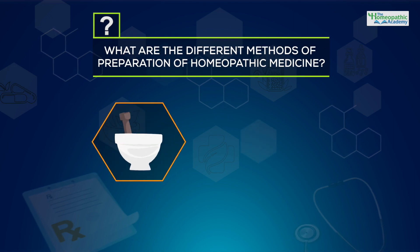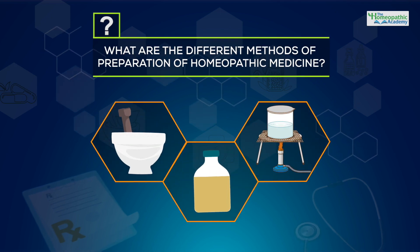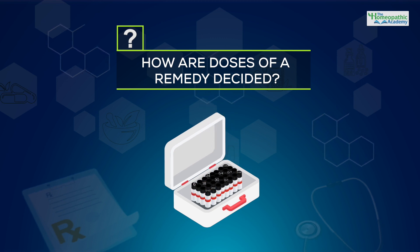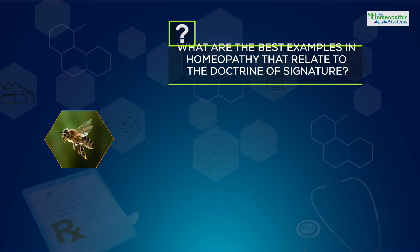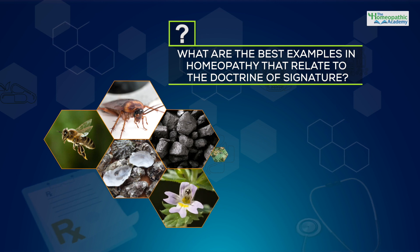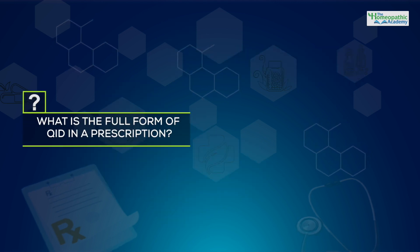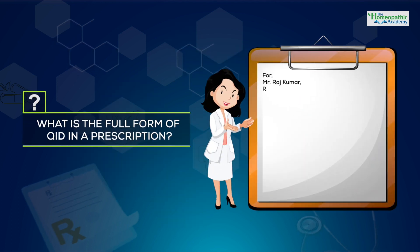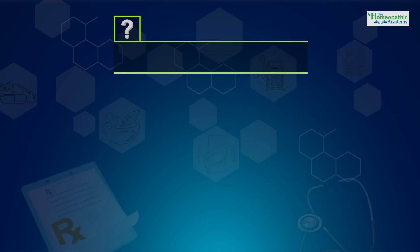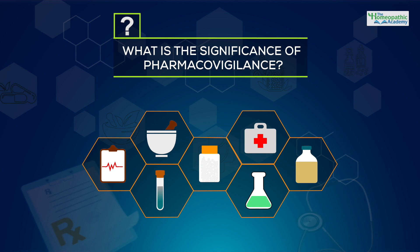What are the different methods of preparation of homeopathic medicine? How are doses of a remedy described? What are the best examples in homeopathy that relate to Dr. Reiner's signature? What is the full form of QID in a prescription? What is the significance of pharmacovigilance?